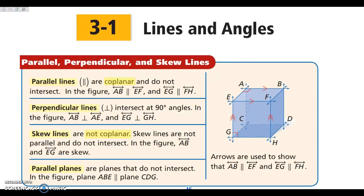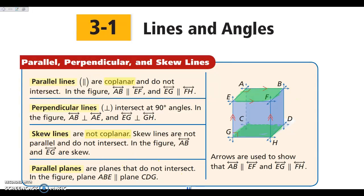Parallel planes are two planes that are never going to intersect. If I look at this top plane, ABFE, it is parallel to the bottom plane. So the top and bottom planes in our cube are parallel. The left and right planes are also parallel because they're not going to intersect even when fully extended. The same thing applies to the front and back planes — they are parallel as well.